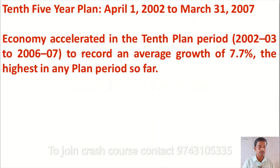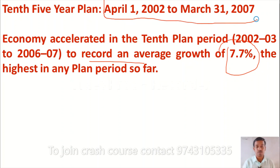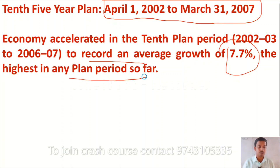The 10th Plan recorded an average growth rate of 7.7 percent, which was the highest among all plans. The period of the 10th Plan was April 1, 2002 to March 31, 2007, and its average growth rate of 7.7 percent was the highest achieved in any plan.